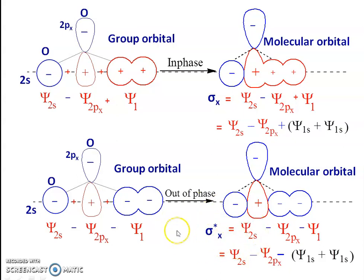The two remaining molecular orbitals are formed with the combination involving the 2pz atomic orbital of oxygen.